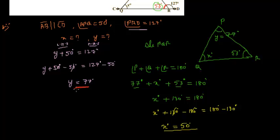So our final answers are: X is equal to 50 degrees and Y is equal to 77 degrees. This is the solution for this question. In the next video, we will solve more problems on Lines and Angles.